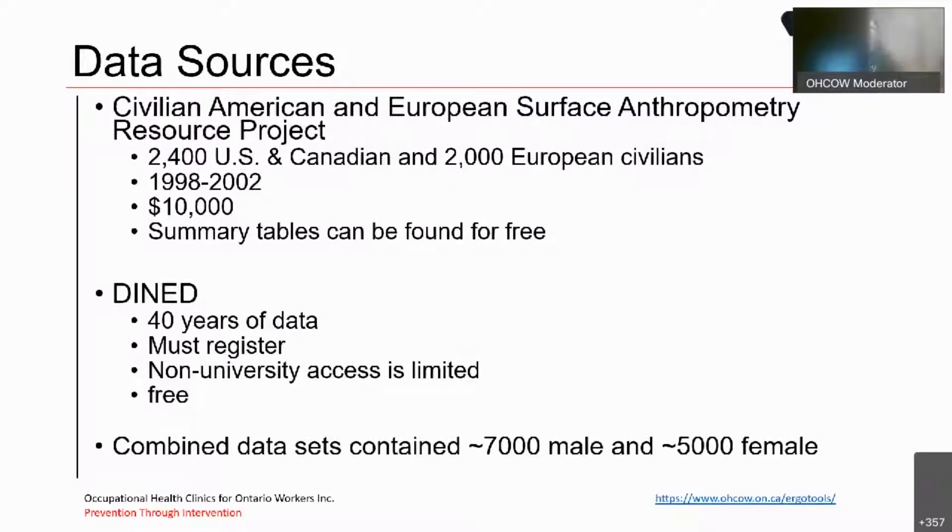Another data source was one known as CESAR, the Civilian American and European Surface Anthropometry Resource Project. It contained data of 2,400 U.S. and Canadians and 2,000 European civilians. It was conducted between 1988 and 2002. And if you want the full data set, it can cost $10,000. Now, summary tables can be found for free. The final data set we used was DINED. It collects 40 years' worth of data. You have to register in order to be able to use it. And if you're not a university member there, access to the core material is limited, but it is free. So, when we combined the ANSUR-1, 2, CESAR, and DINED data sets, we actually came up with a total of 7,000 male measurements and 5,000 female measurements that were combined to create the tool.